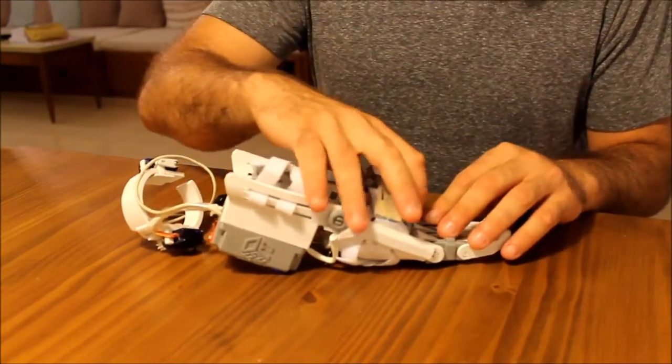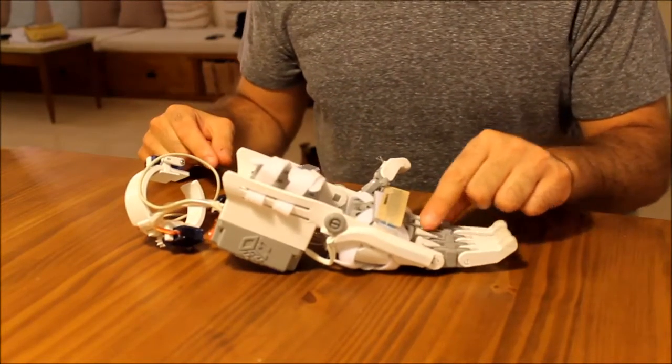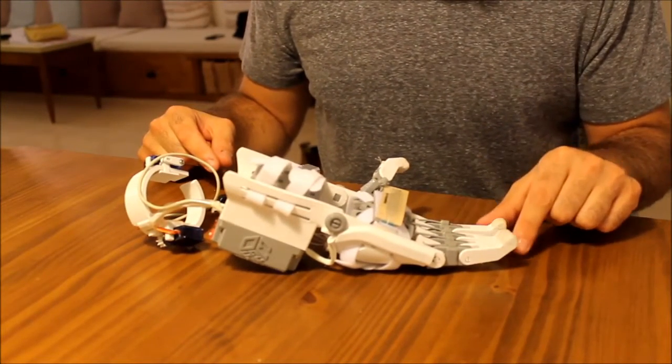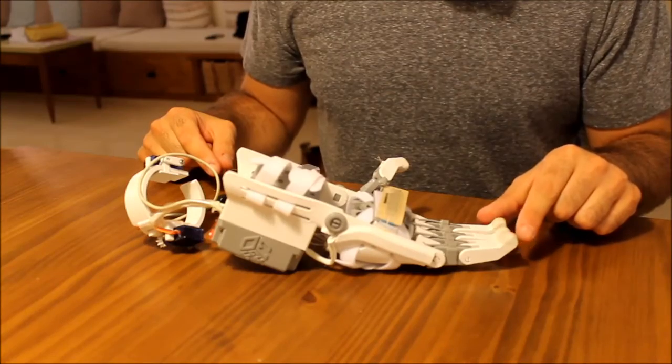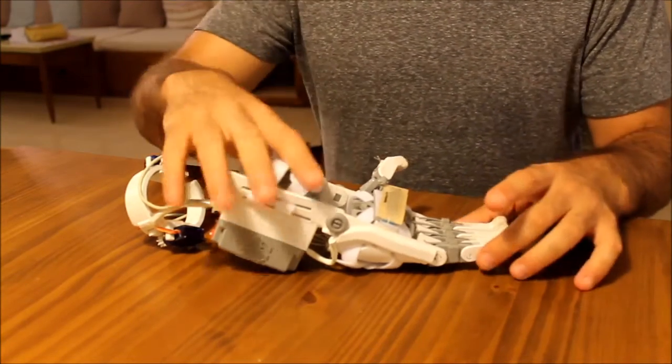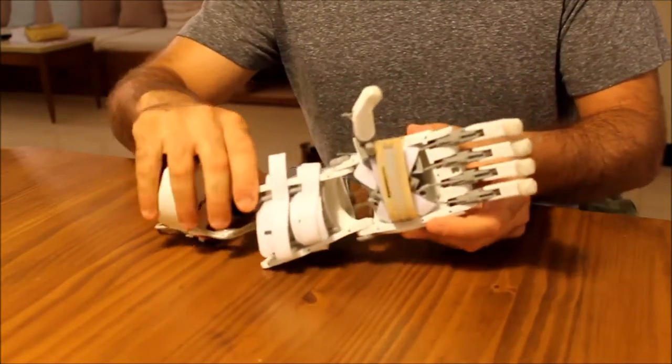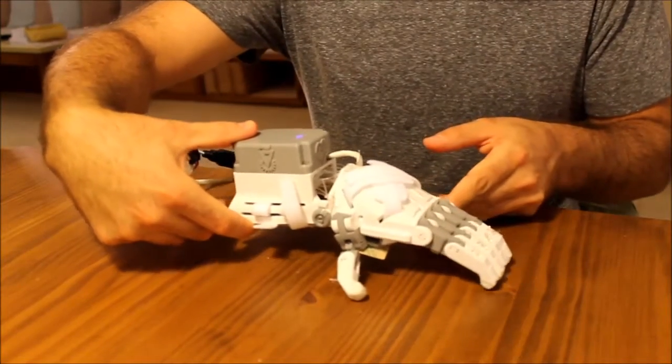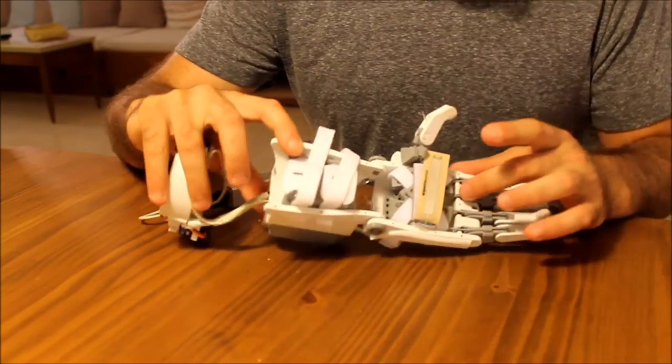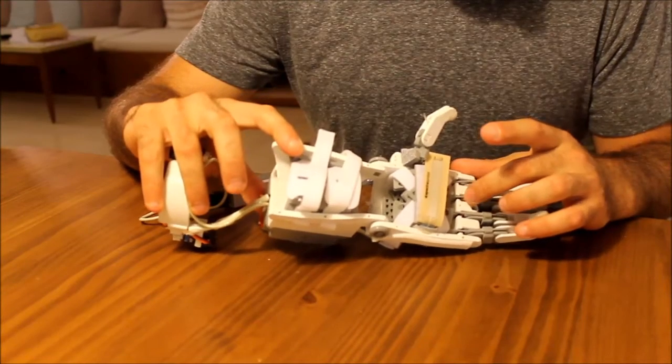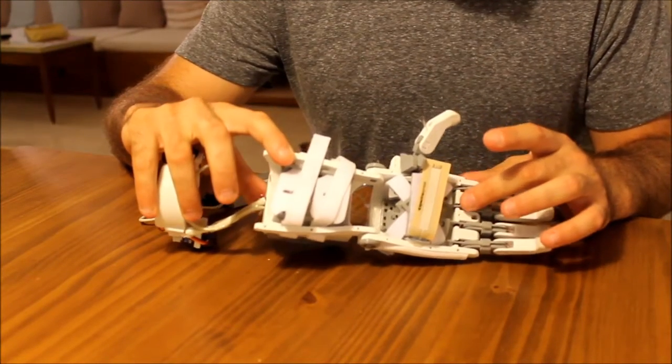And the last thing is we have these four rods that are connected to the tip of the fingers. What they give is when you touch something, the texture will cause these rods to vibrate and they will touch the user's stump.